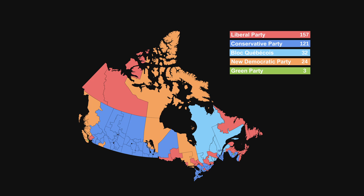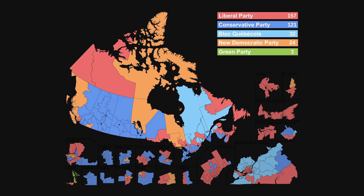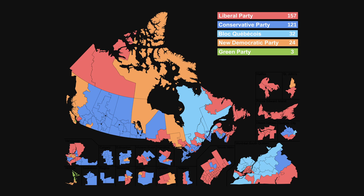Wait a second. If the Red Party got that many seats, then where are they? Well, the answer in this case is that they're in cities, which are way too small to see on the large map. People try to solve this by adding extra little sections showing individual cities, but it's still really hard to actually understand what's going on here.